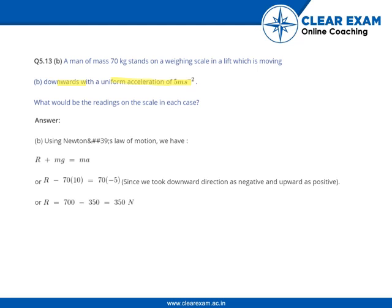Using Newton's law of motion, we get that R plus mass into gravity is equal to mass into acceleration. Putting in the values, we get R equal to 700 minus 350. Since we took the downward direction as negative and upward as positive, we considered acceleration as minus 5. We get the resultant force as 350 Newtons.